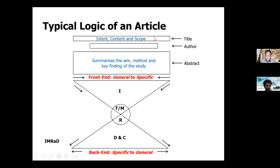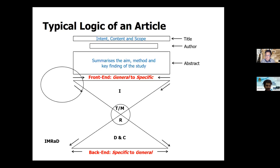I can imagine that when we read a paper most of us probably start with the title, then read the abstract, and if we find it interesting maybe read a bit of the introduction before jumping to the conclusions. What I'm going to suggest is that if you jump to conclusions, you miss really important information. What I'm going to show you is what the really important bits of information are that we need to pay attention to.